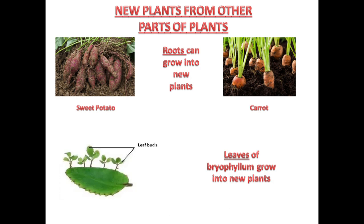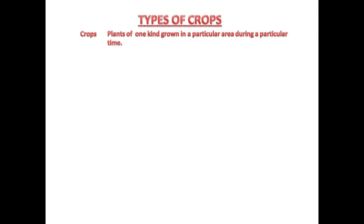Now let us learn about types of crops. Crops means plants of one kind grown in a particular area during a particular time. There are two types of crops: Rabi crops and Kharif crops.